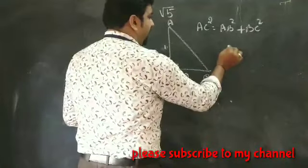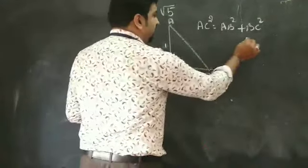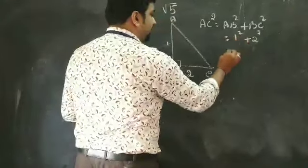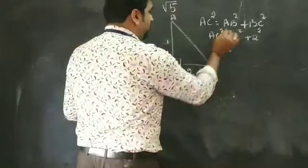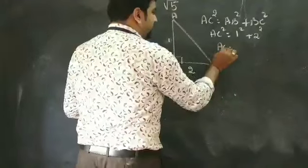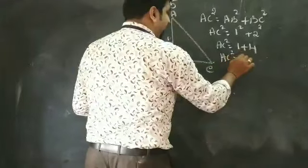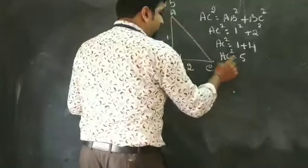So what I will get? I will get the two sides square, that is 2 square plus 1 square. AC square equal to 2 square plus 1 square. AC square equal to 1 plus 4, so 2 square is 4. So AC square equal to 5.